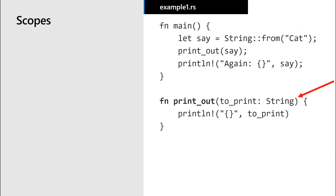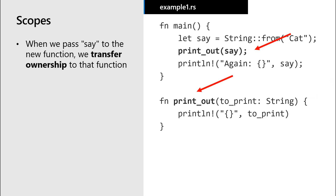We have a second function which takes a string and prints it out. When I pass the value of the say variable to the second function, I transfer ownership of the value to that function.